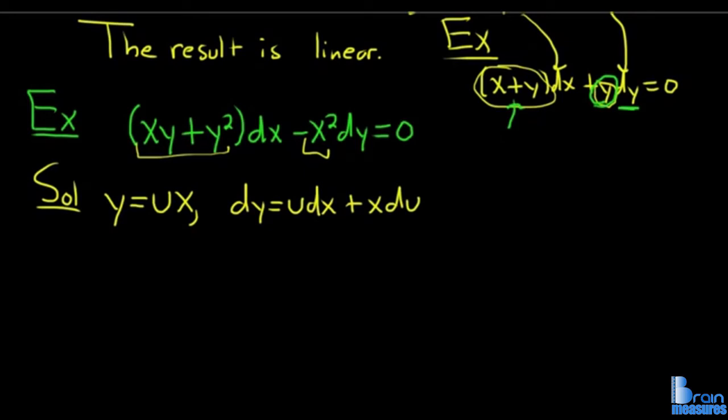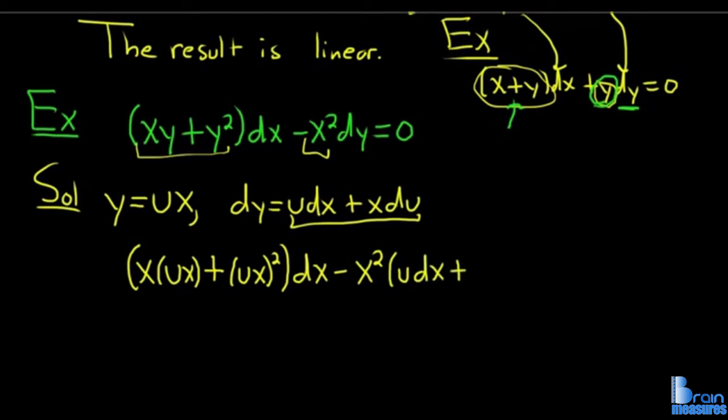We'll start by letting y = ux, so dy = udx + xdu. Now we make the substitution very carefully. x is x, y is ux, so we have x(ux) + (ux)²dx - x²(udx + xdu) = 0. So far so good.